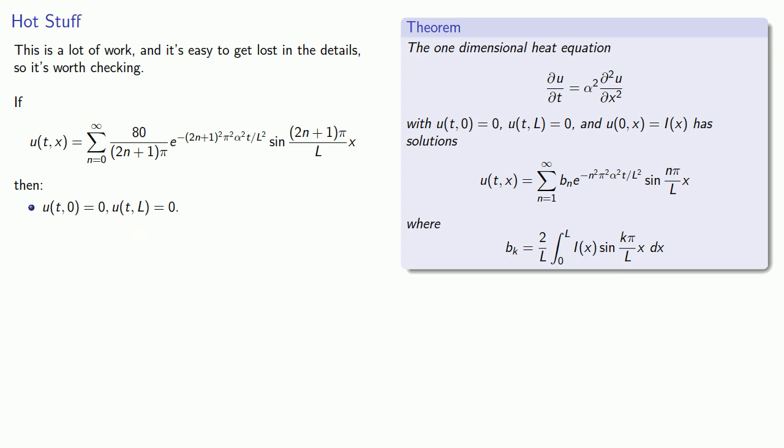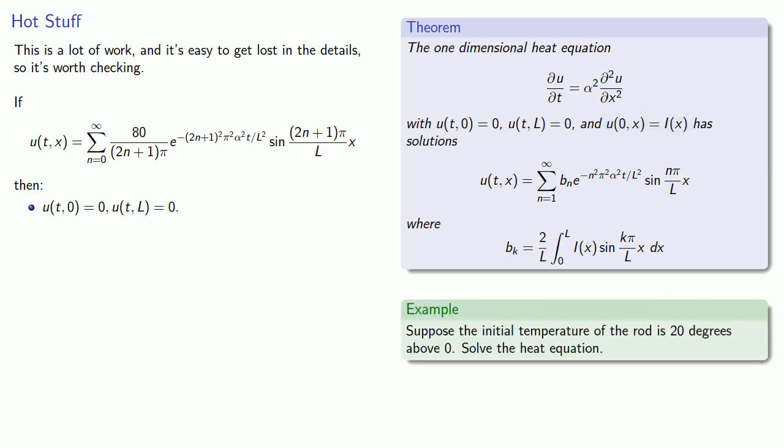Meanwhile, u of 0x is going to correspond to the initial temperature distribution of the rod, and if we've done our work correctly, then when t equals 0, we get the Fourier series for our initial temperature, 20 degrees above 0. Well, I wouldn't take my word for it.